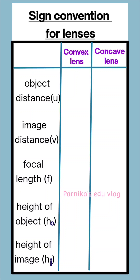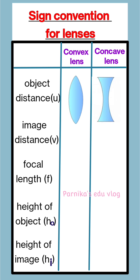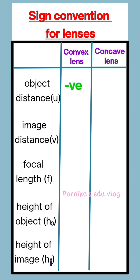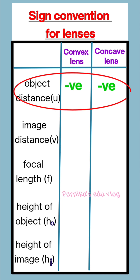Hello students, today we are going to learn sign convention for lenses. First one is convex lens, second one is concave lens. Object distance u is negative for convex lens and here also negative for concave lens. Remember students, object distance is always negative for both the lenses.